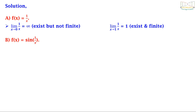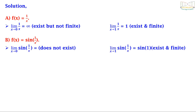For option B, f(x) = sin(1/x): the limit as x tends to 0 of sin(1/x) does not exist, as it is an oscillating function. The limit as x tends to 1 of sin(1/x) equals sin(1), which exists and is finite. Since the limit as x tends to 0 does not exist, option B is also not true.